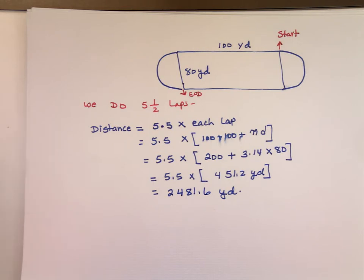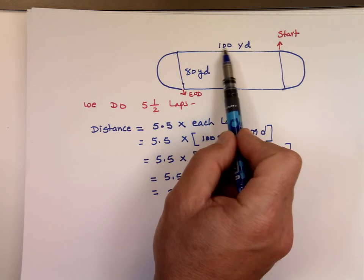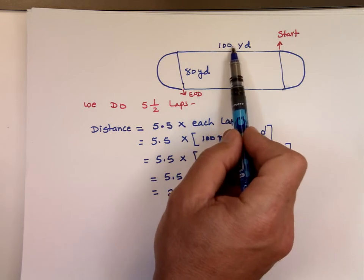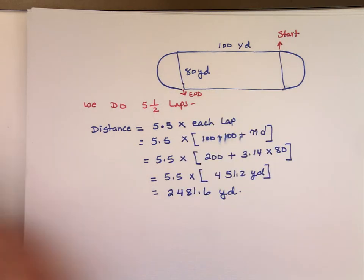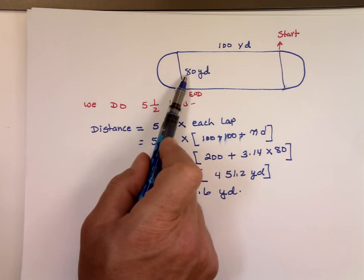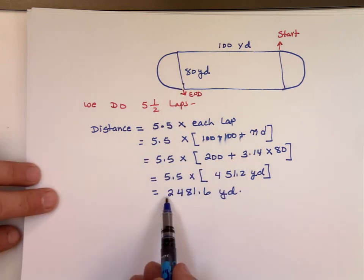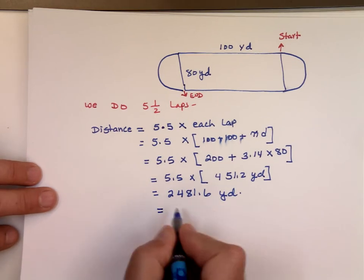Now, if I want to use significant digits, this number is how many significant digits? How about 100? There's no dot here. The zeros don't count unless there's a dot at the end. That's one significant digit. This is one significant digit. Your answer should be one significant digit. So if you want to write this as significant digits, your answer should be 2,000.